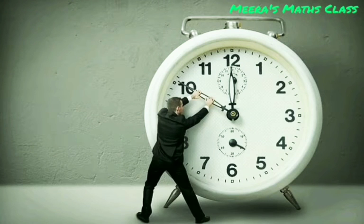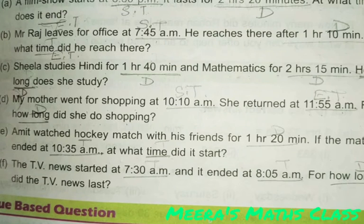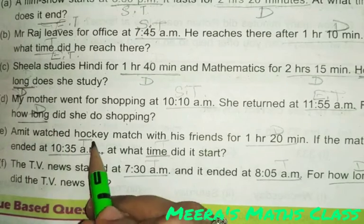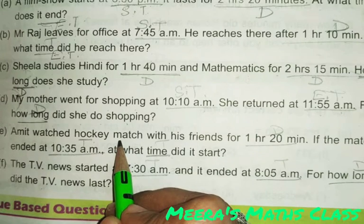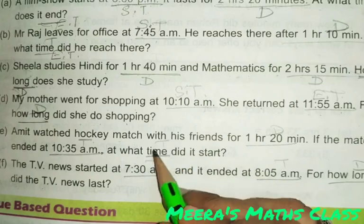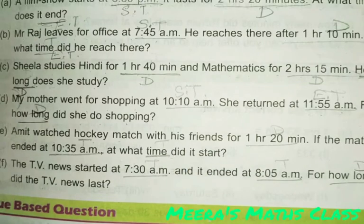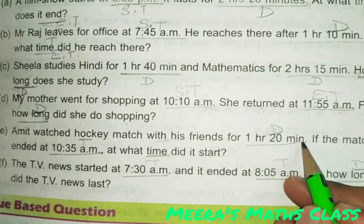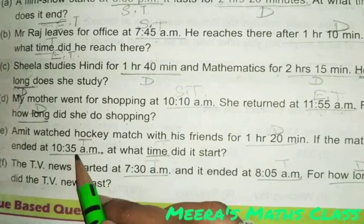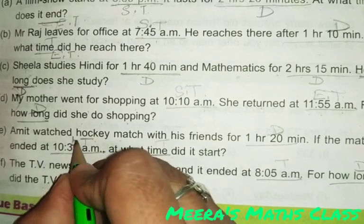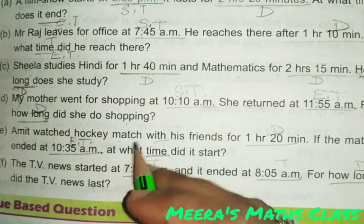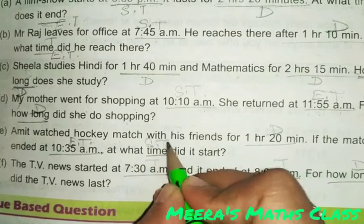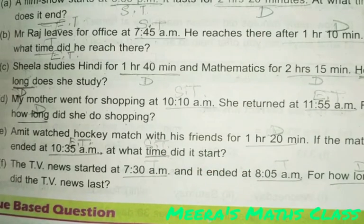Welcome to Mira's math class. Let's read the question: Amit watched a hockey match with his friends for 1 hour 20 minutes — that is the duration of time. If the match ended at 10:35 AM, that is the ending time. At what time did it start? The starting time is what we need to find.